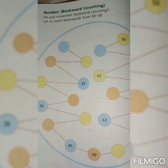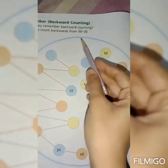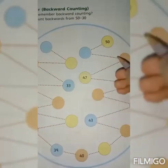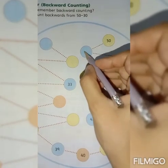So students, we will do backward counting. Look, first we will count from 52 to 30, backward counting. Look, this is 50. What comes before 50? 49.